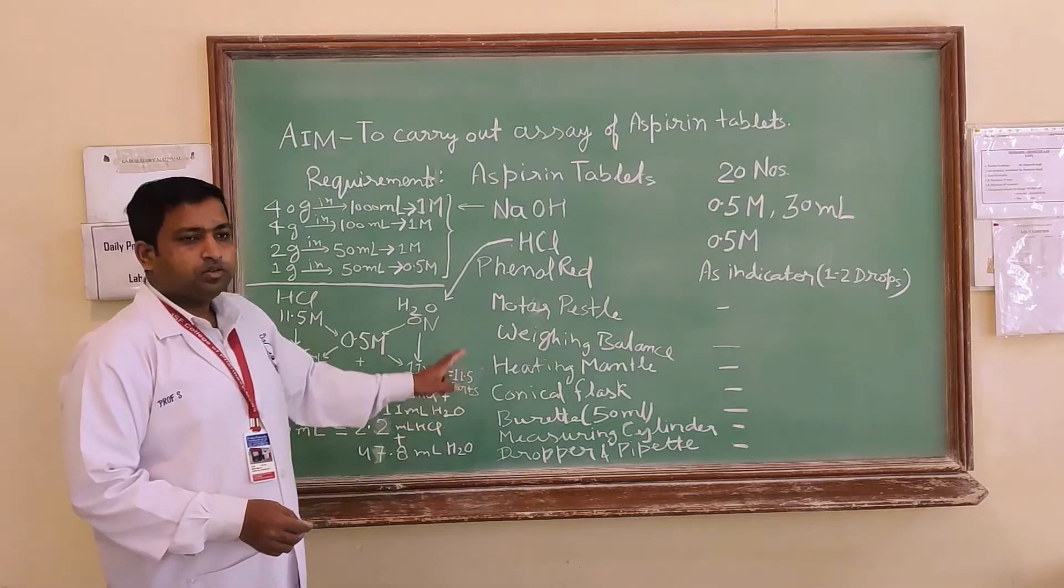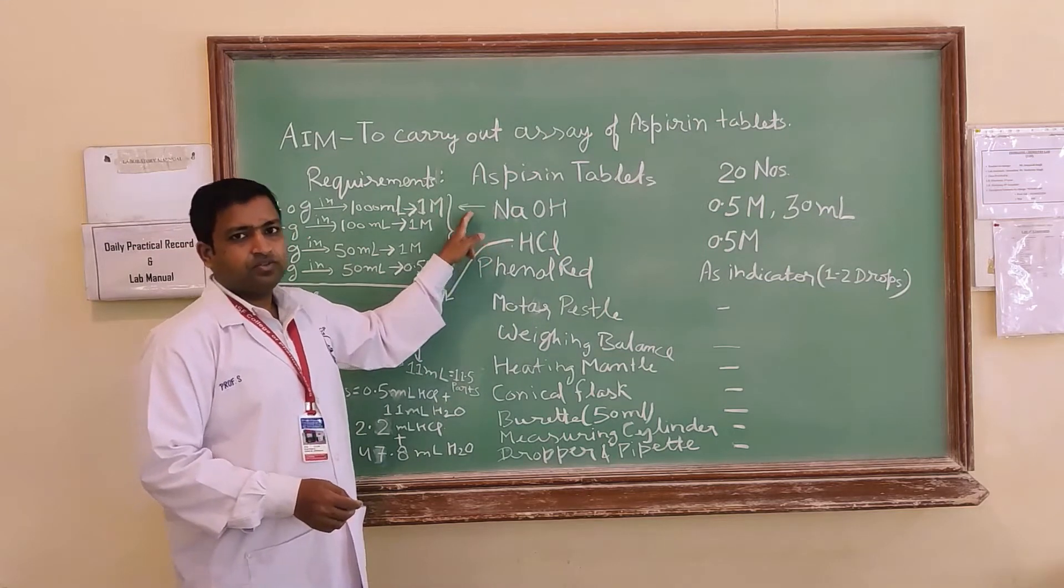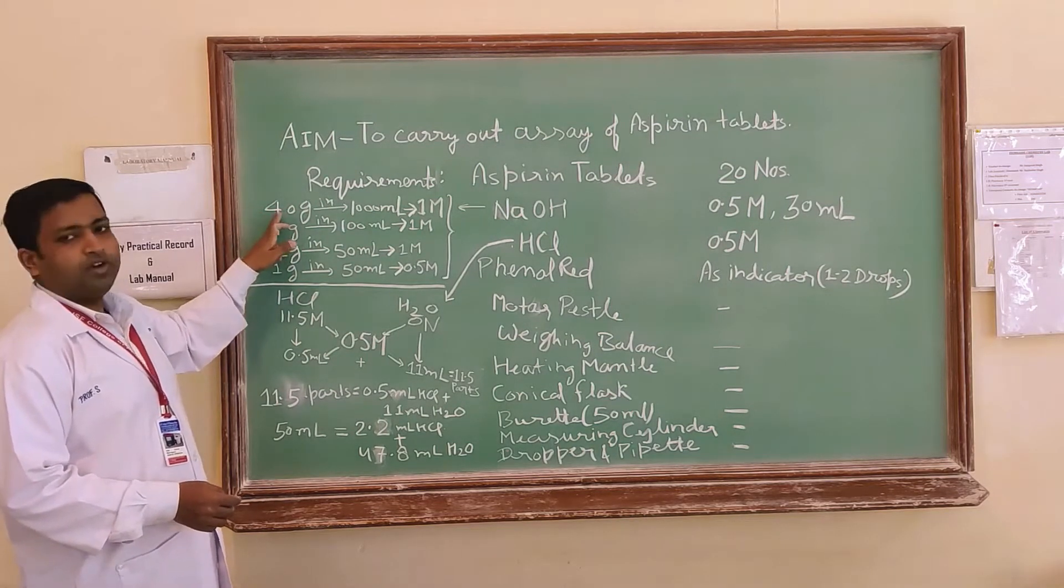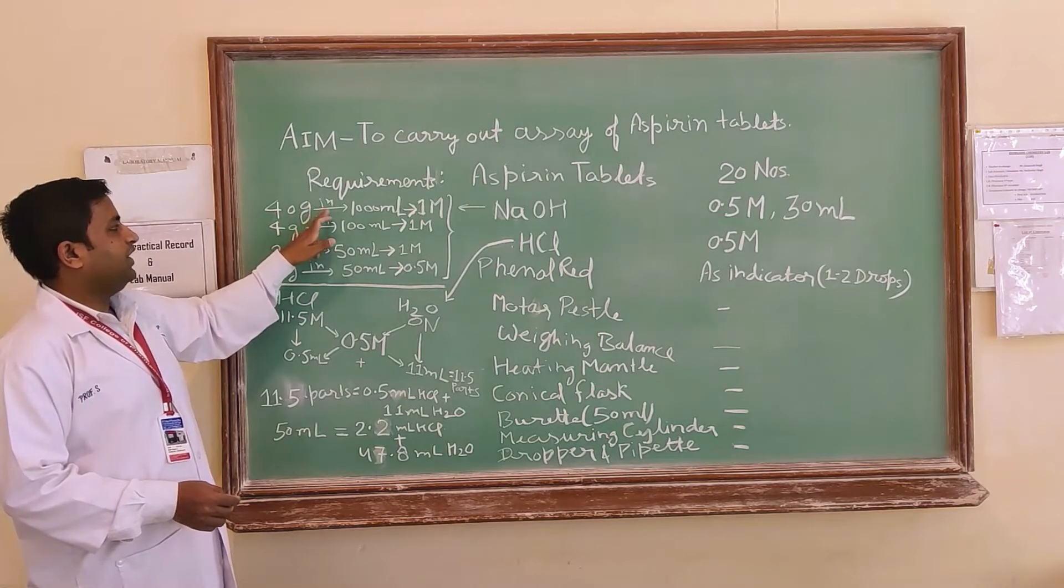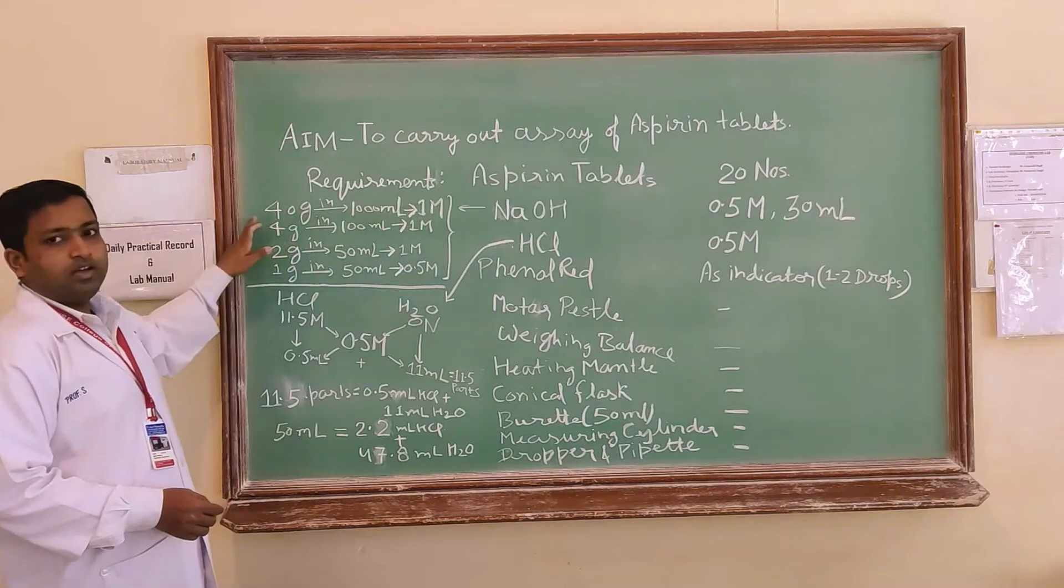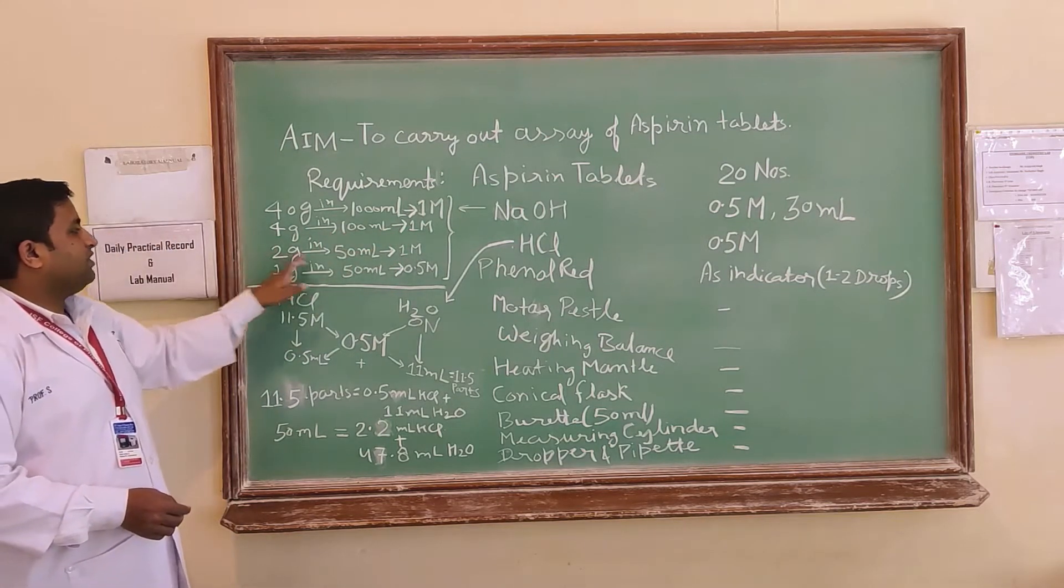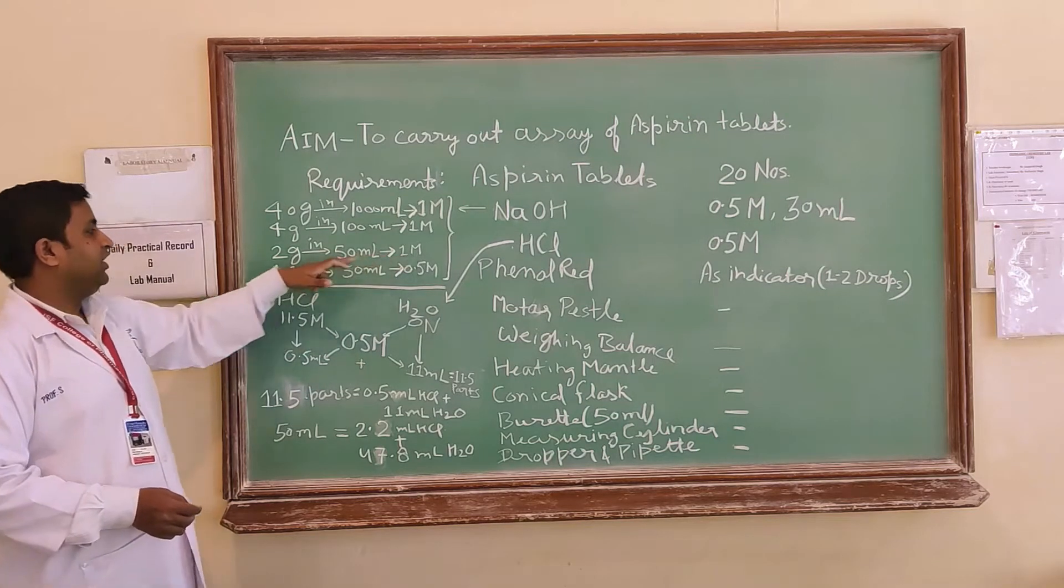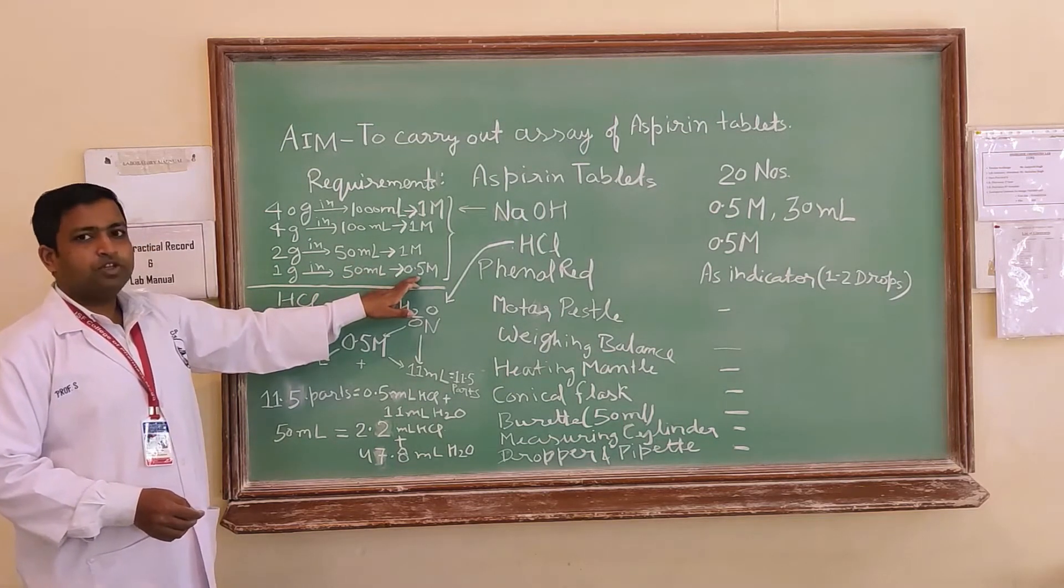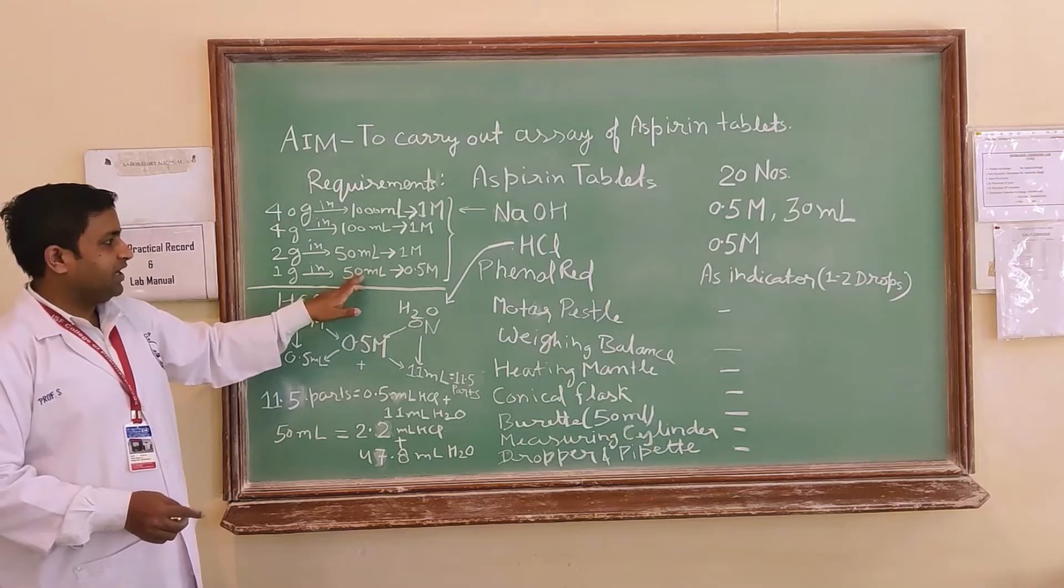The question is how you will prepare 0.5 molar NaOH. So you require, firstly you can see that if you will take 40 grams of NaOH in 1000 ml it will make 1 molar. If you take 4 grams in 100 ml it will also be 1 molar and 2 grams in 50 ml it will also be 1 molar. If you require 0.5 molar, if you reduce the quantity half and the volume is same it will make 0.5 molar. Finally if you take 1 gram of NaOH and make its volume up to 50 ml it will make 0.5 molar NaOH in 50 ml.